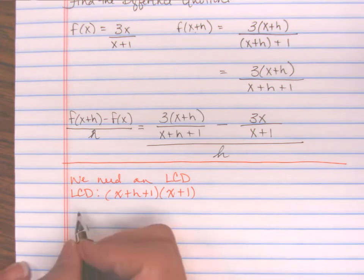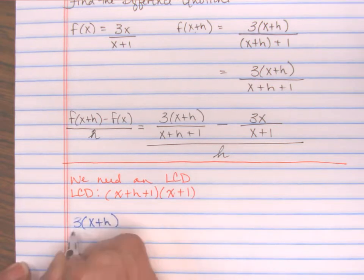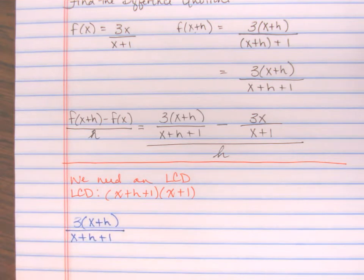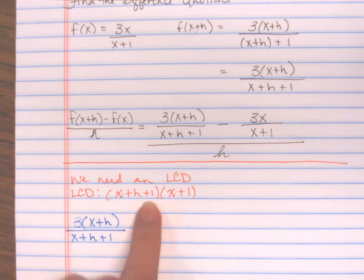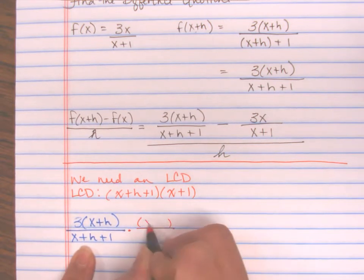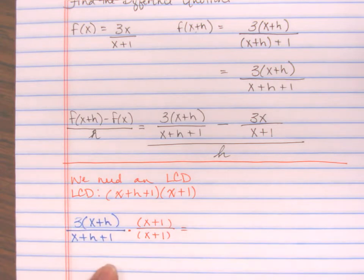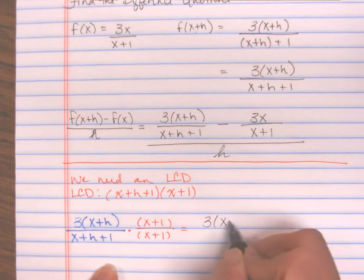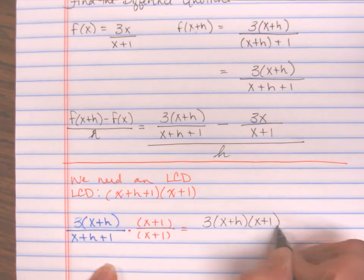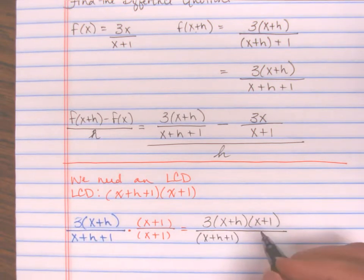I need to take my first fraction, 3(x+h) divided by (x+h+1), and give it the LCD. I already have (x+h+1), so I need to multiply numerator and denominator by what's missing: (x+1). Now my numerator is 3(x+h)(x+1) and my denominator is (x+h+1)(x+1).